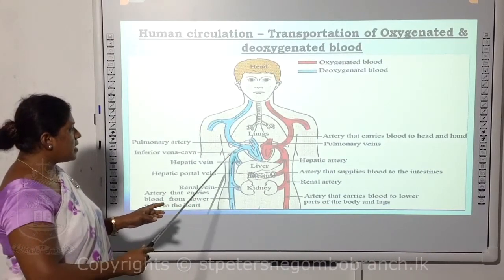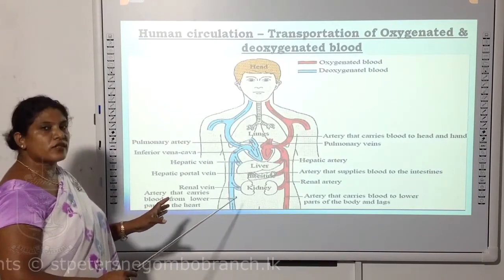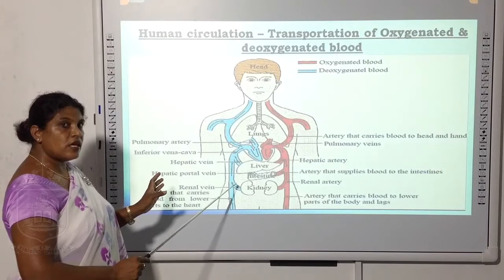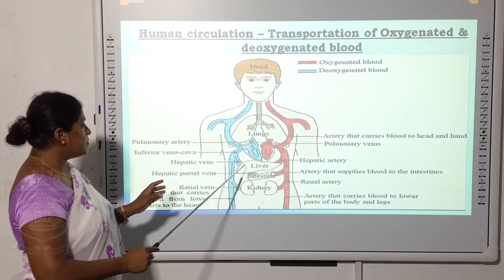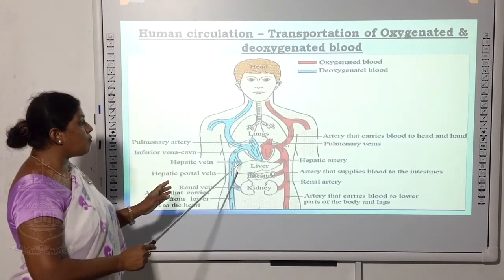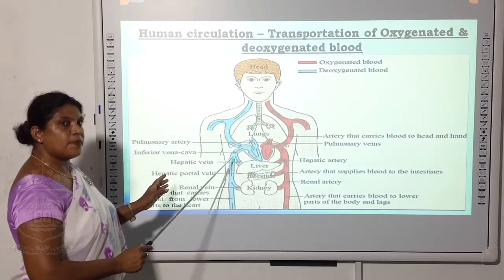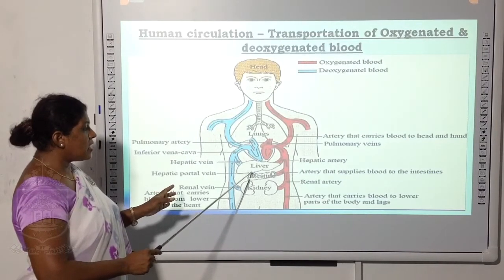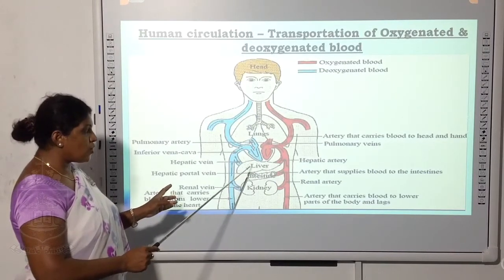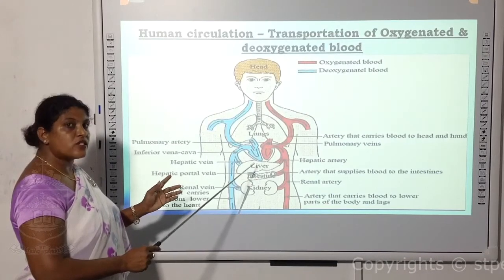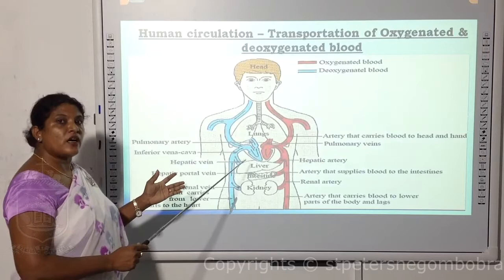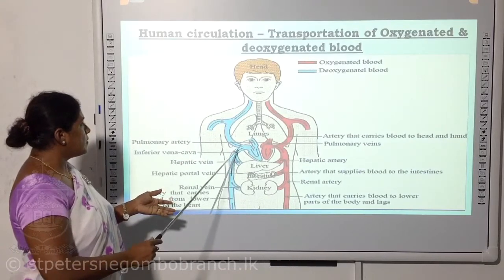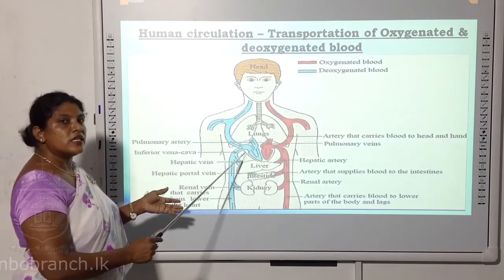The deoxygenated side carries blood with carbon dioxide. The renal vein leaves from the kidney and enters the inferior vena cava. The hepatic vein leaves from the liver and enters the inferior vena cava. Between the liver and the intestine is the hepatic portal vein, which carries blood with both impurities and nutrients. Excess glucose is converted to glycogen and stored in the liver, and the remaining impurities enter the inferior vena cava. All deoxygenated blood collects in the inferior vena cava.